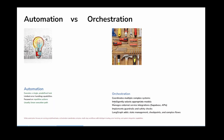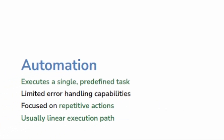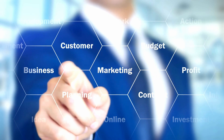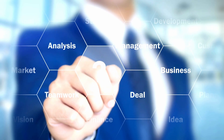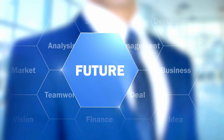So let's go into the difference between automation and orchestration. Automation usually executes a single predefined task — a repetitive action, usually a linear execution path. What do I mean by that? That means A calls B, B calls C, C calls D, and that's all it does. We've automated that instead of somebody manually kicking off A, then B, then C.